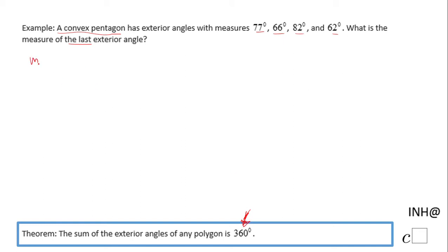That means the measure of angle 1, the first exterior angle, plus the measure of angle 2, the second, plus the measure of angle 3, the third, plus the measure of angle 4, the fourth, plus the measure of angle 5—we have five exterior angles for this pentagon—is nothing else than 360°.